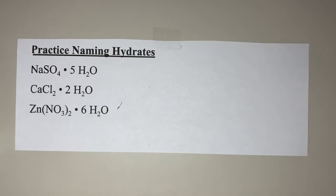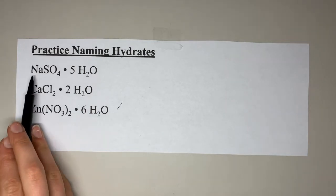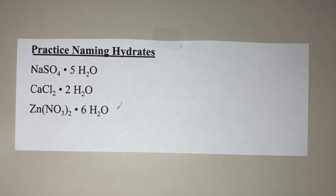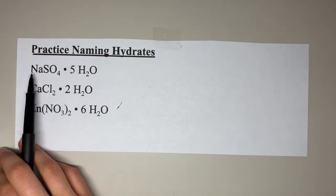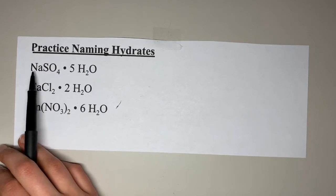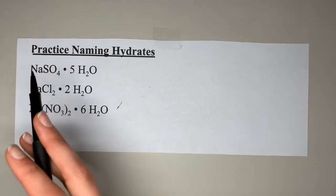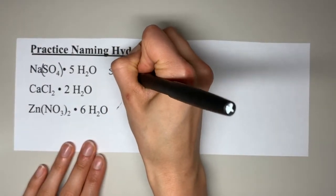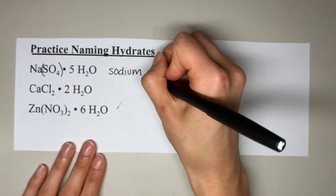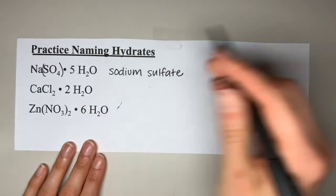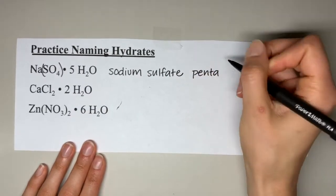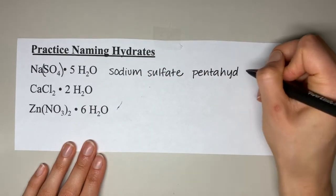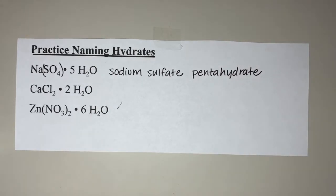Now let's practice naming hydrates on your own — pause the video, try them, then play for answers. For the first one: sodium is a metal, so it is ionic; not a transition metal; it contains sulfate, a polyatomic. The compound is sodium sulfate. The prefix for five is 'penta,' and water is 'hydrate.' The answer is sodium sulfate pentahydrate.